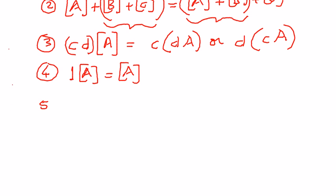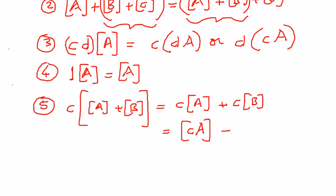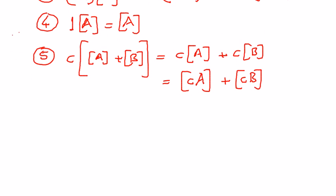The next property is: if we have a constant C and we distribute it to matrix A plus matrix B, it is very similar to the distribution property we have seen in algebra. This takes the form C times matrix A plus C times matrix B. Since C is a constant, we can distribute it to every element in matrix A and every element in matrix B, giving us C times A plus C times B.